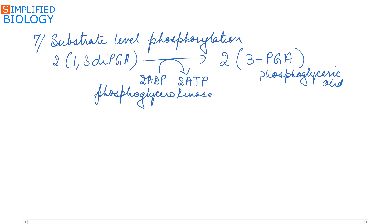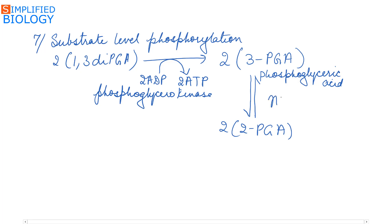3-phosphoglyceric acid is then converted into its isomer, 2-phosphoglyceric acid. Since there is a change in the position of the phosphate group, the enzyme used here is mutase.